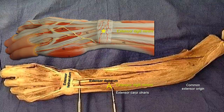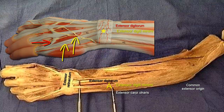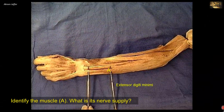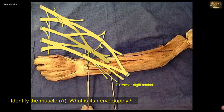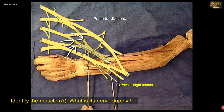On the dorsum of the hand, the tendon of extensor digiti minimi divides into two and joins the expansion of the extensor digitorum tendon. Since the muscle is an extensor, it is innervated by a branch of the radial nerve — specifically the posterior interosseous nerve. The radial nerve, derived from the posterior divisions of the brachial plexus, is the nerve of the extensor compartments. In limb plexuses such as the brachial and lumbar plexus, anterior divisions supply flexor muscles while posterior division derivatives supply extensor compartments. The posterior cord, from which the radial nerve originates, is derived from the posterior divisions of the upper, middle, and lower trunks of the brachial plexus.